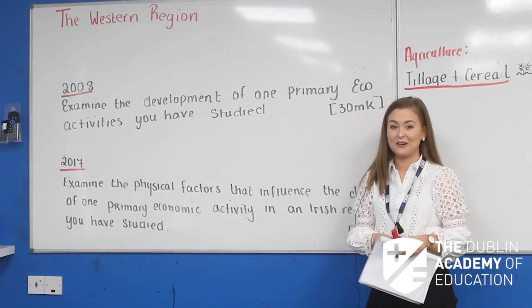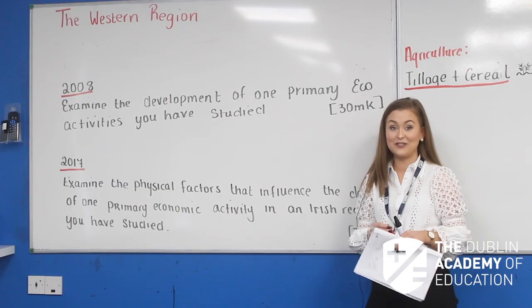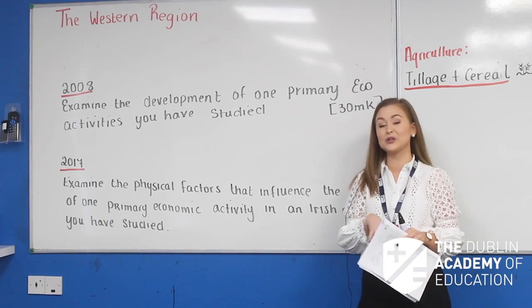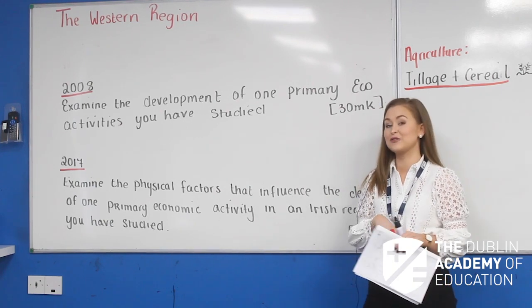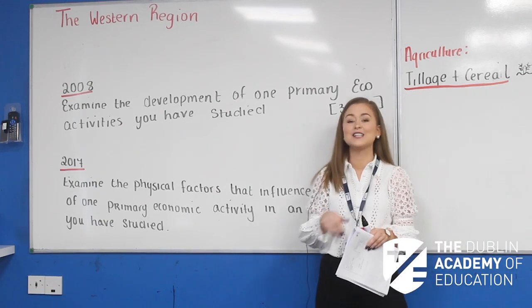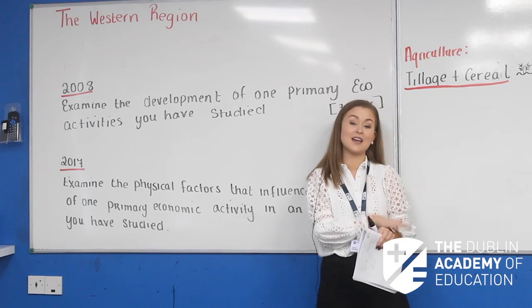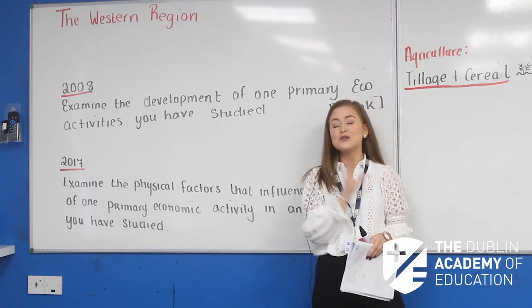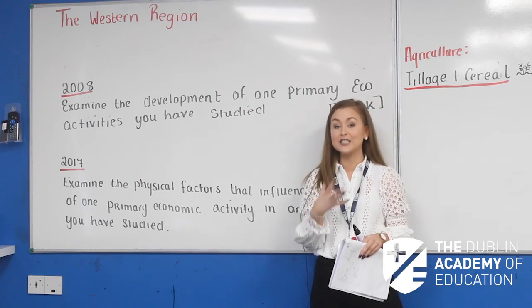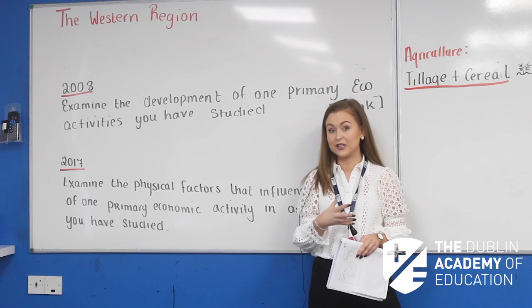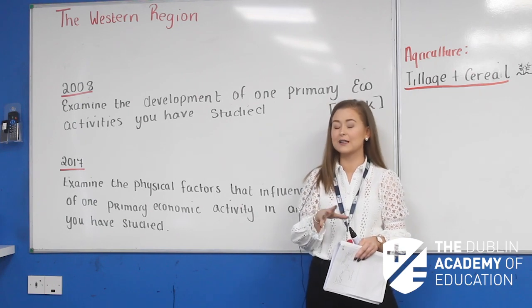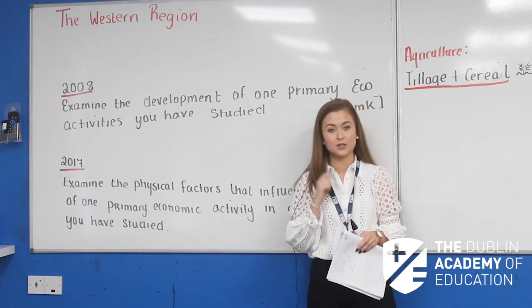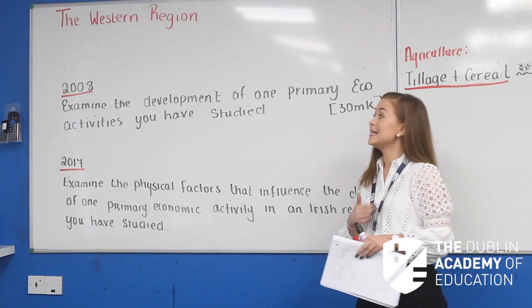Hi guys, welcome back to our third geography lesson. We're still focusing on the western region. What we've done so far is we've looked at our sketch of Ireland, our physical characteristics which we're going to glance back on today, our climate, drainage and soils.